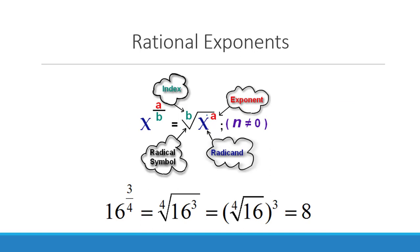Radicals can be written as rational exponents, and rational exponents can be written as radicals — these two are telling you the exact same thing. So x to the a over b power: b ends up becoming your index, and a is whatever exponent you're raising x to.